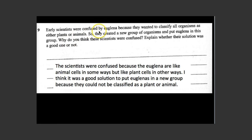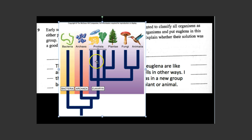Number nine: Early scientists were confused by euglena because they wanted to classify all organisms as either plants or animals, so they wanted to create a new group and put euglena in it. Why were they confused, and was their solution a good one? The scientists were confused because euglena are like animal cells in some ways but like plant cells in others, so they couldn't classify it as either. It was a good solution to create a new group. Euglena falls in the protista group, and it was one of the first specimens that helped define this new kingdom.